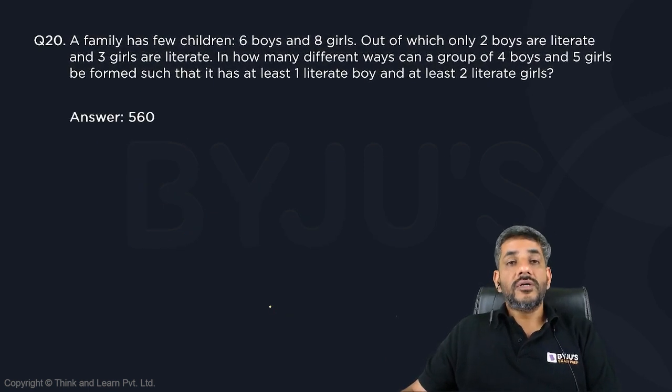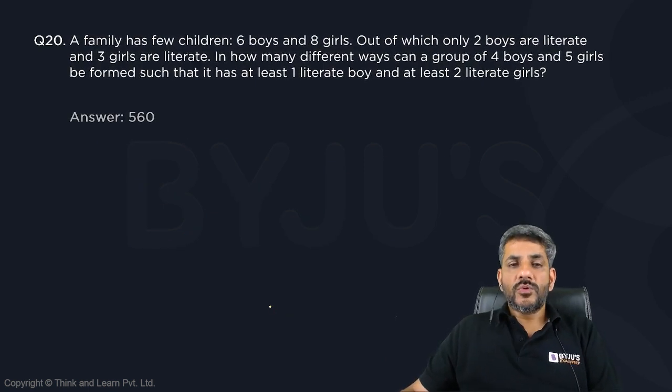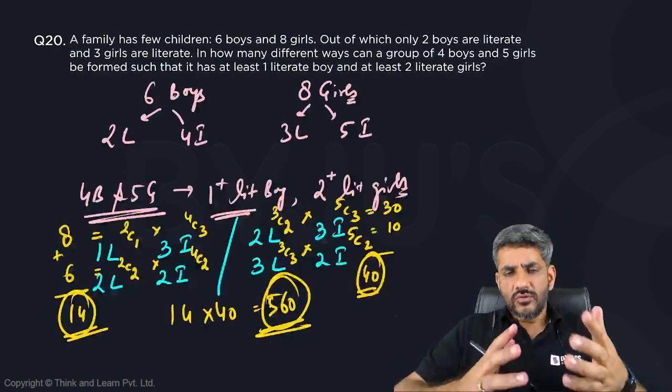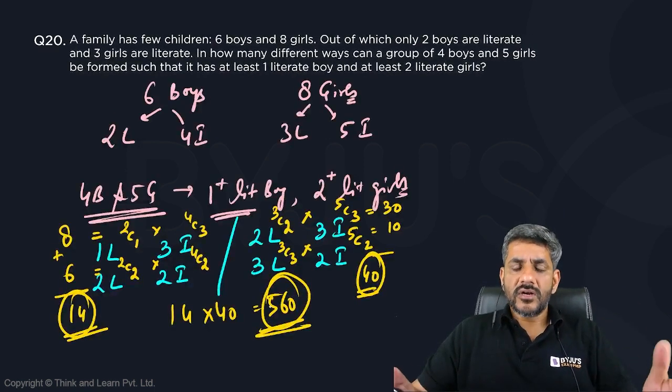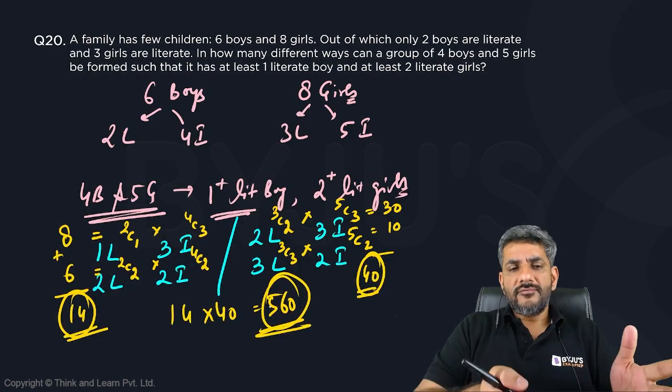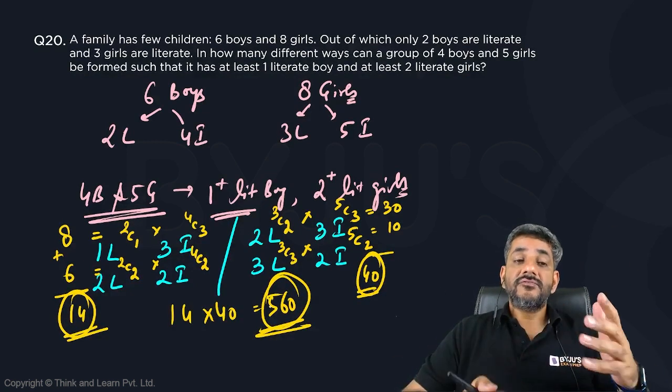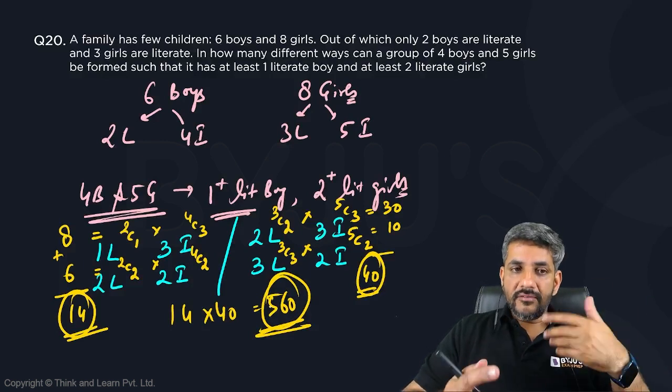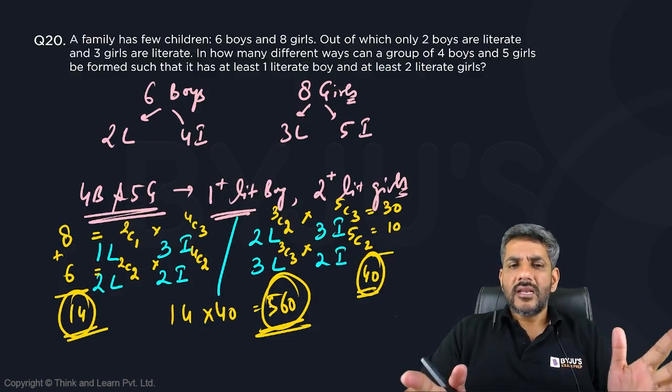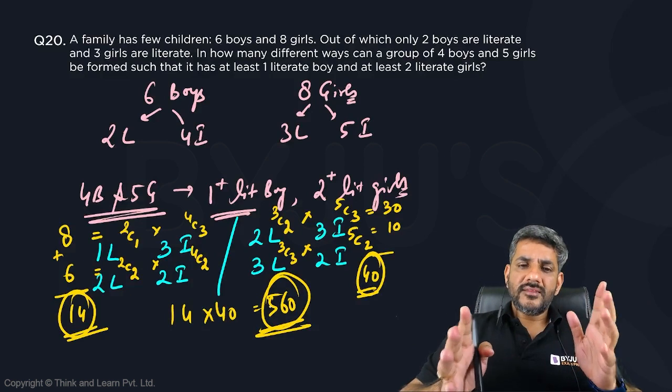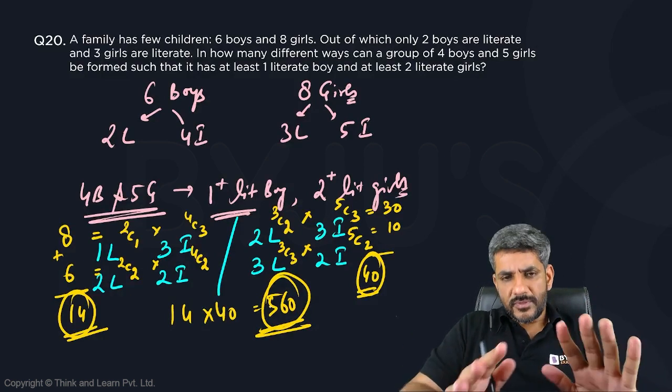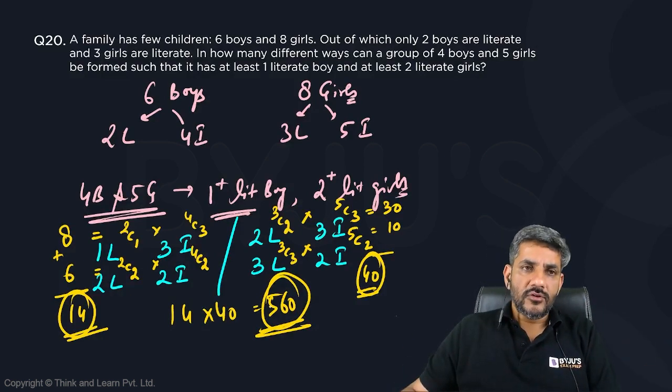So that is my answer for question number 20. It is a question from permutation and combination. Though, of course, we had to make cases—we did not have a choice. Even if you make cases otherwise, that means the cases which are not allowed, even that would be quite lengthy in this scenario. So I think either of the ways, it is going to be a moderate level question in my opinion.